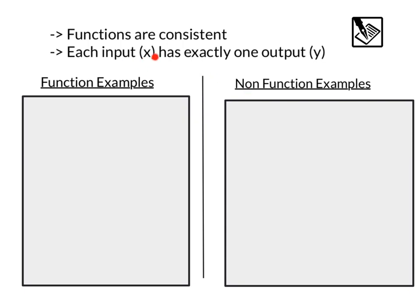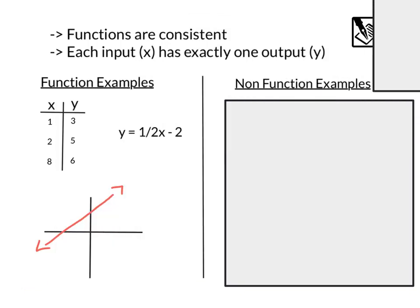For now, functions are consistent. That means that each input x has exactly one output y for it to be considered a function. So for example, if we take a table, each x has one y: one-three, two-five, eight-six, that's a function. Y equals one half x minus two, an equation. This one is just a regular line. That's only going to have one x will give us one y. And in the case of a graph, if we put points on this graph, xy, xy, xy, xy, each x would only have one y.